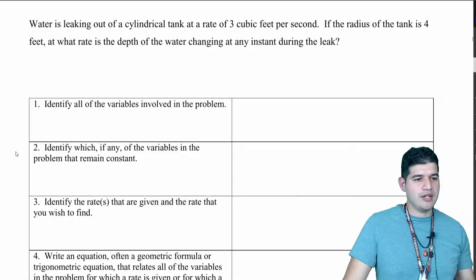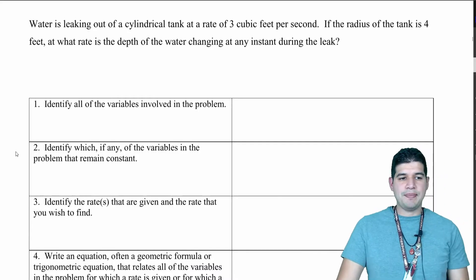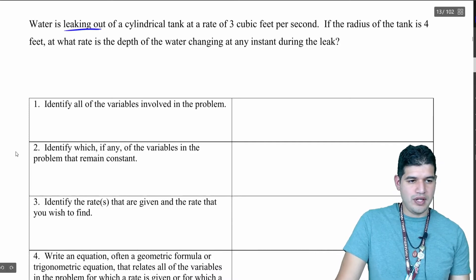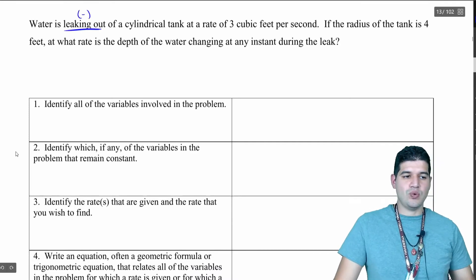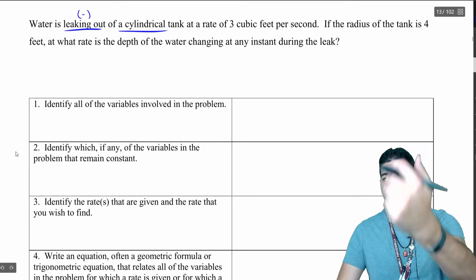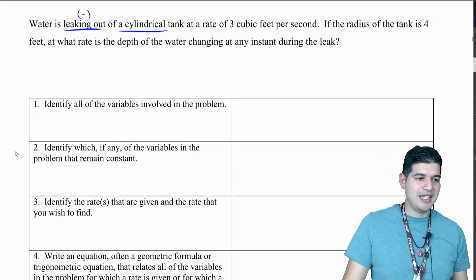As I'm reading this problem, we're looking at things that are happening. We've got water, it is leaking out, so that's telling me that a value is going to be negative. Cylindrical tank - that's going to tell me what formula to use.